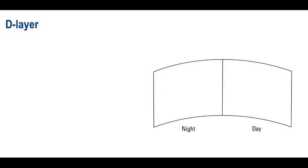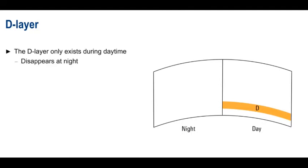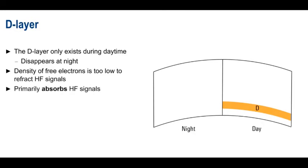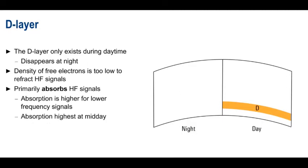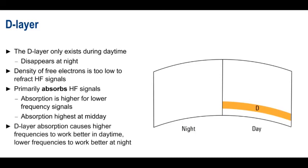Let's start with the lowest level of the ionosphere, the D layer. The D layer only exists during daytime hours, and disappears at night. Although the D layer is ionized by solar radiation, the density of free electrons in the D layer is too low to effectively refract HF signals, and therefore the D layer cannot be used for skywave propagation. Instead, the D layer acts as an absorber of HF signals. This absorption is higher for lower frequency signals than for higher frequency signals. Absorption also increases with increasing ionization, so absorption is usually highest at midday. For these reasons, the properties of D layer absorption mean that higher frequency HF signals work better during the daytime, whereas lower frequency signals work better at night, after this layer has disappeared.